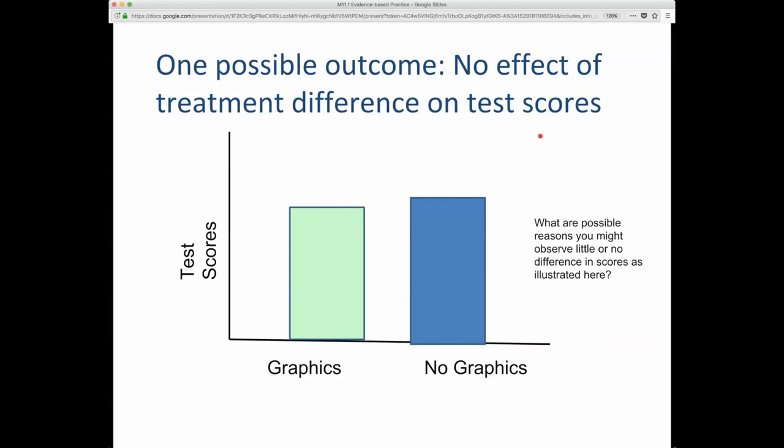So, what are possible outcomes? You could have essentially no effect of the treatment difference on test scores. Here's a bar chart of test scores, and I haven't labeled this axis. This is meant to be abstract, but this difference doesn't look like very much. What happens when there is no statistically reliable difference between the two? What are some possible reasons you might observe little or no difference in scores as illustrated here?